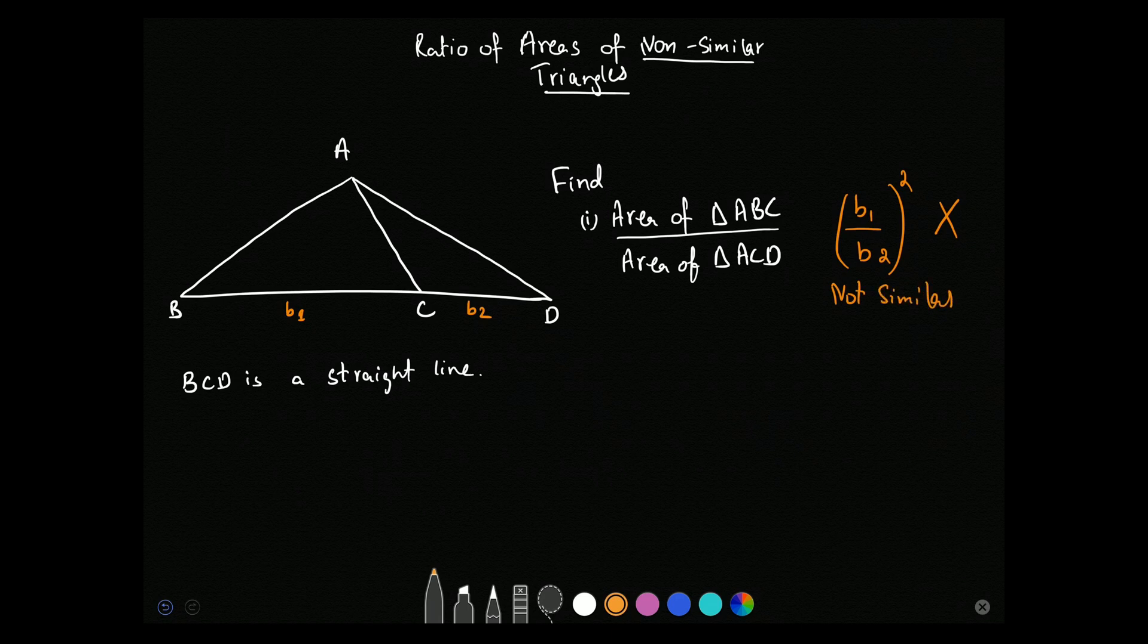So what do we do if these are not similar? Then how do we find the ratio of the areas? Now, there is a very simple thing that you have to identify. BCD is a straight line.